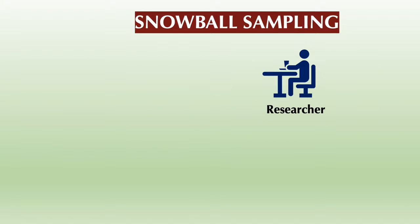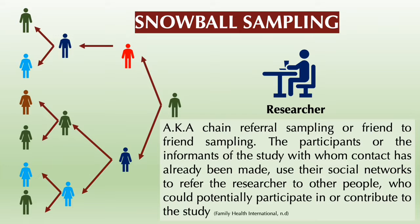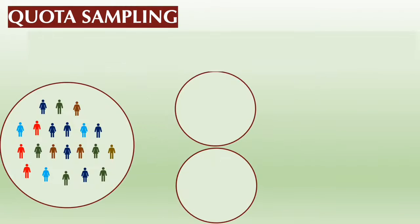Third is snowball sampling, also known as chain referral sampling or friend-to-friend sampling. Sometimes snowball sampling is considered to be a type of purposive sampling. In this technique, the participants or informants with whom contact has already been made use their social networks to refer the researcher to other people who could potentially participate in or contribute to the study. This is often used to find and recruit hidden samples that are not easily accessible to researchers using other sampling strategies.